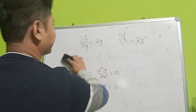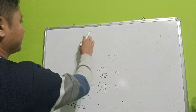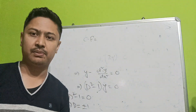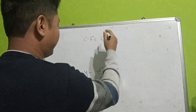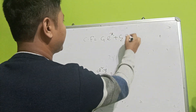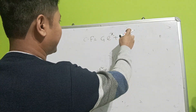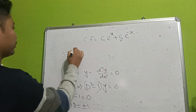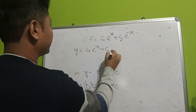So we have a complementary function as the general solution. The complementary function is: y equals c1 times e to the power x plus c2 times e to the power minus x, where m1 equals plus 1 and m2 equals minus 1.